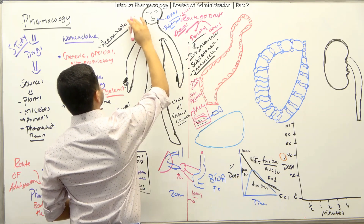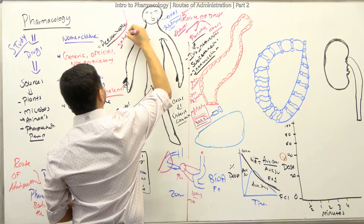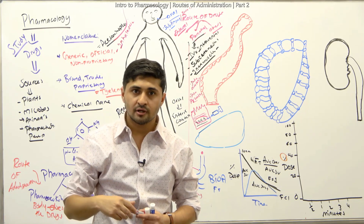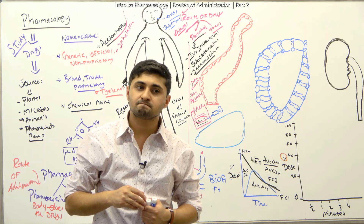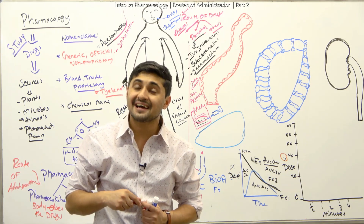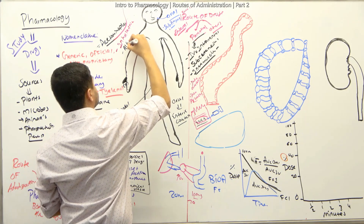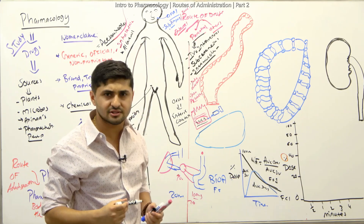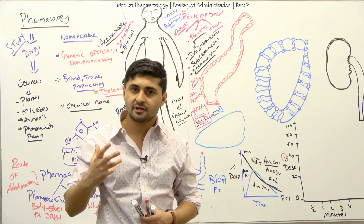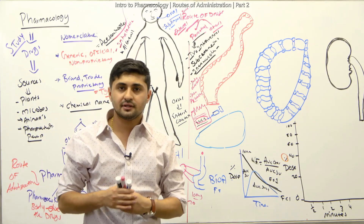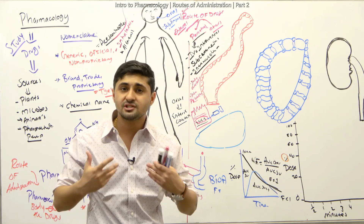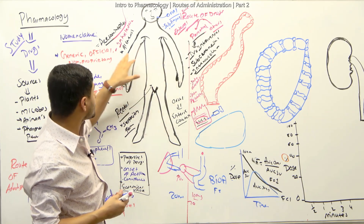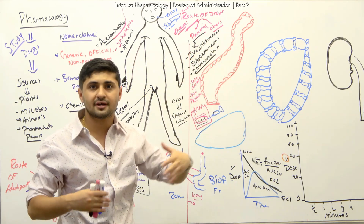Now for other routes, let's start with inhalations. Inhalations divide into oral inhalations and nasal inhalations. Oral inhalations are used for conditions like asthma, where you need to dilate the bronchi using bronchodilators — for example, albuterol, or sometimes nitric oxide. Albuterol dilates the bronchi, making expiration easier for people with asthma. These don't fit enteral or parenteral, so we categorize them as others.